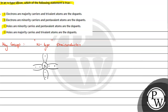Now we will talk about impurity. Impurity can be added in two ways: we can add trivalent impurity, which gives p-type, or pentavalent impurity. We will discuss the p-type briefly but focus on the n-type, which uses pentavalent impurity.